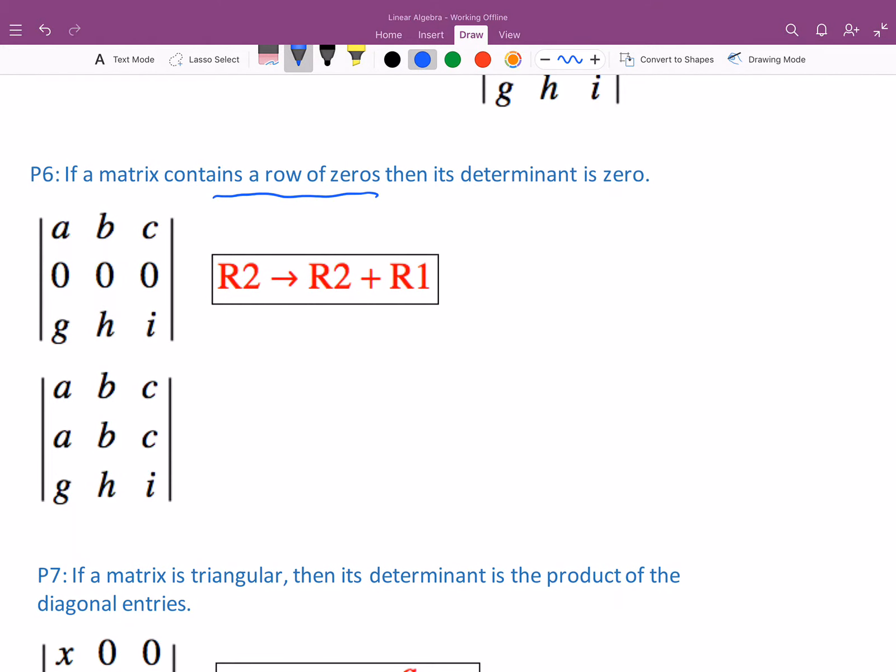This is really easy to establish because take that row of zeros and do this row operation on taking row 2, which is the zero row, and adding one times any other row, let's say the first one.